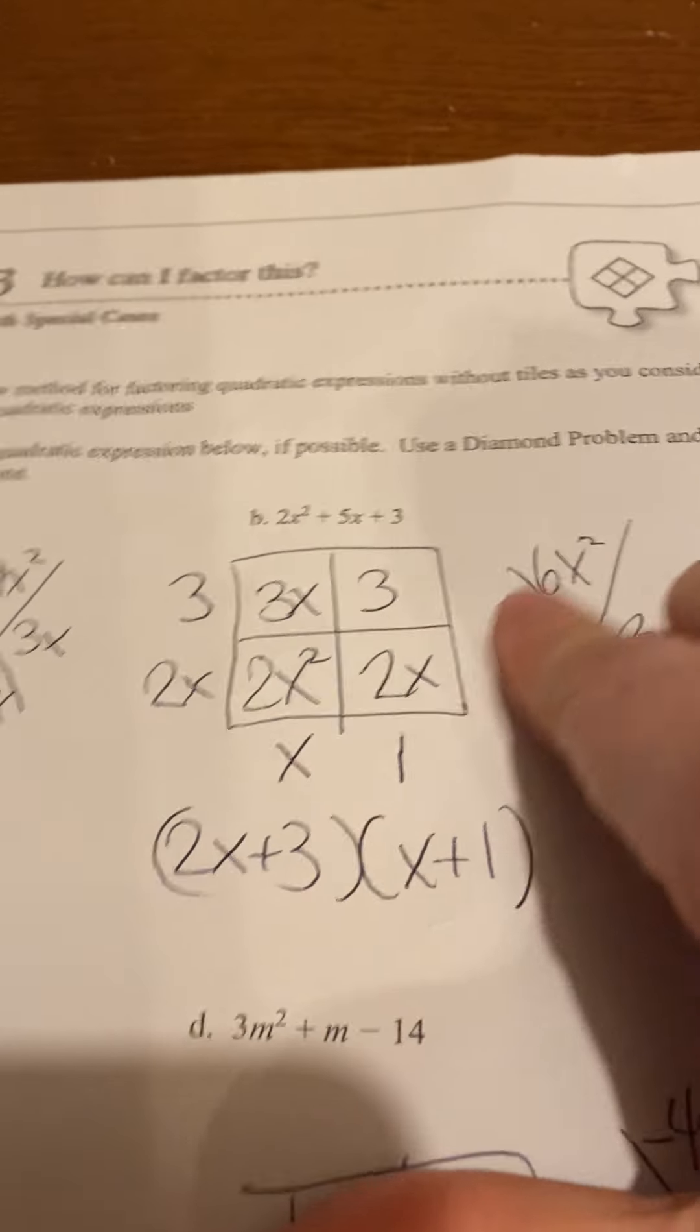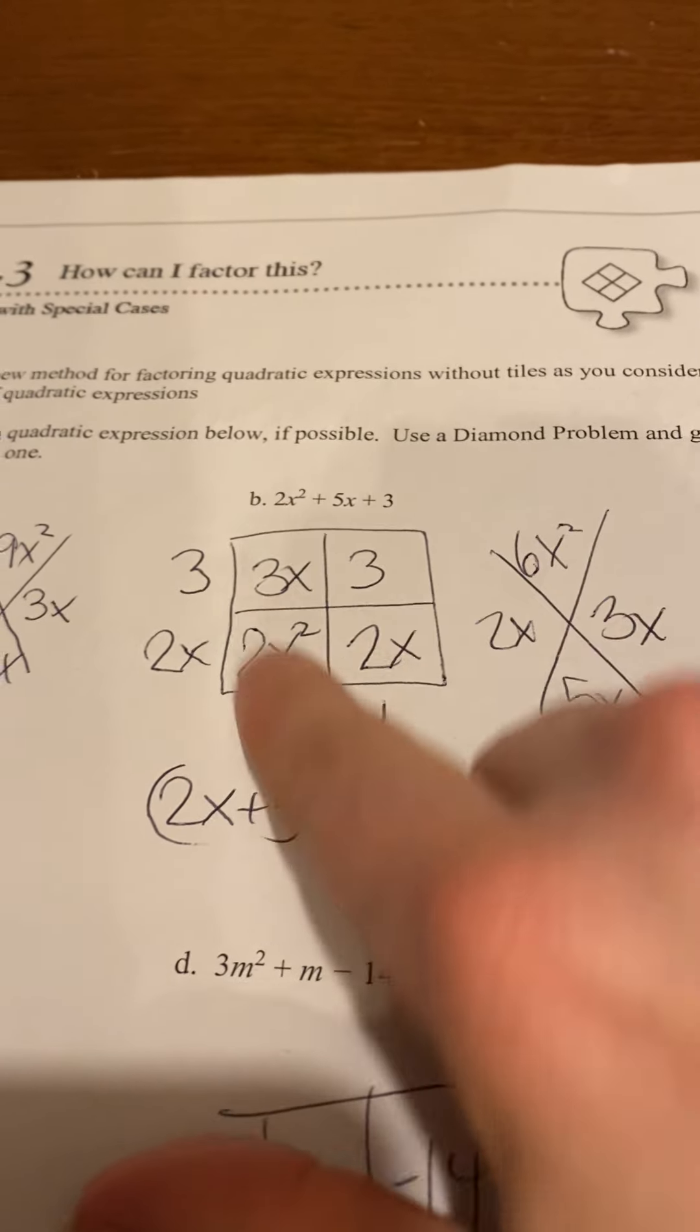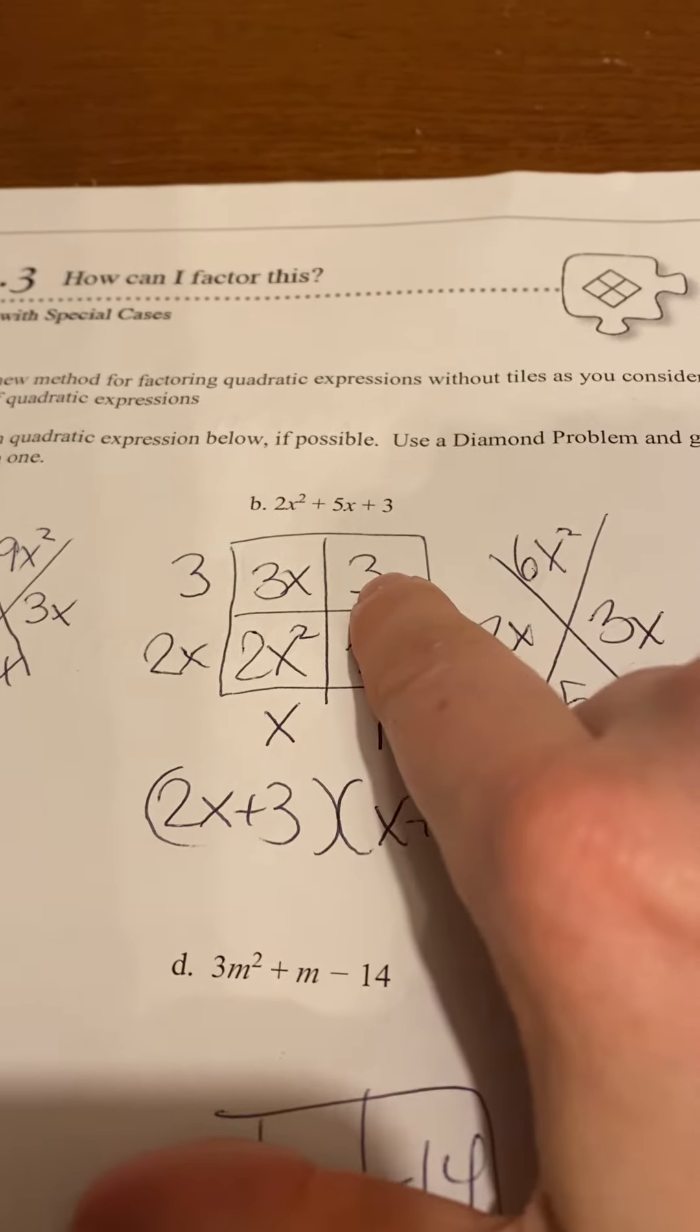On this one when you draw your generic rectangle, you put your 2x squared here and your 3 goes there.